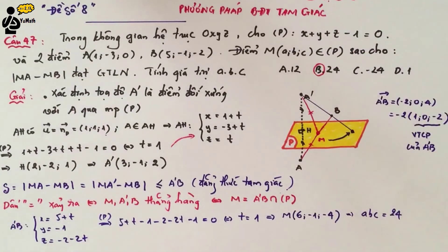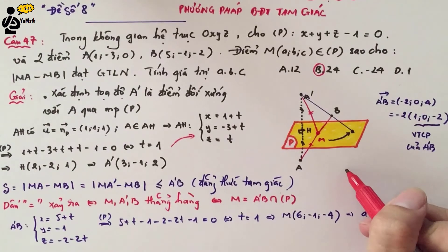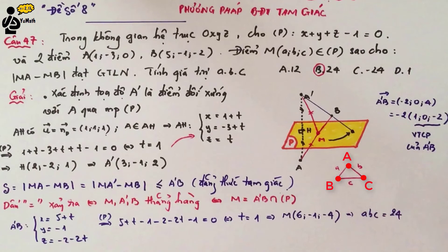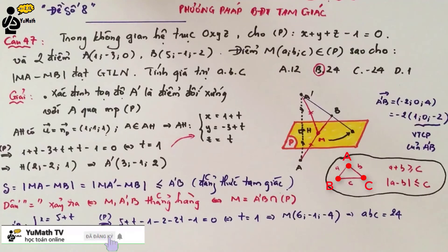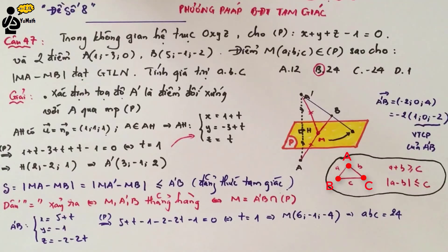Using this small trick of applying the triangle inequality, we can solve this problem easily. Note that if A and B are already on the same side of plane P, you do not need the reflection step. To recap the triangle inequality: in triangle ABC with sides a, b, c, we have a + b ≥ c and |a - b| ≤ c. Equality holds when the three points are collinear — meaning they no longer form a triangle.